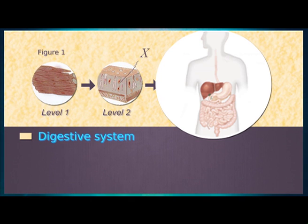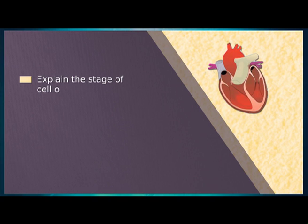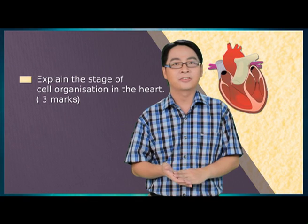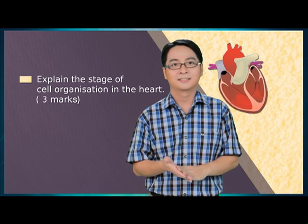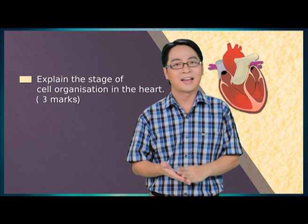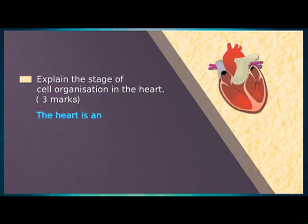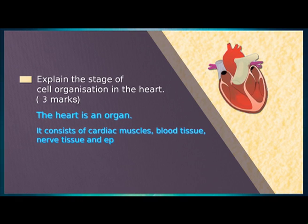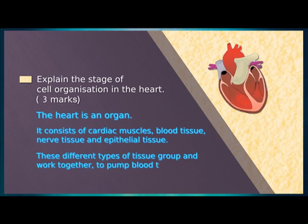Let's try another question. Explain the stage of cell organisation in the heart. Three marks. First, identify the stage of cell organisation of the heart. Then, the different types of tissue groups. And finally, the function. The heart is an organ. It consists of cardiac muscle, blood tissue, nerve tissue and epithelial tissue. These tissues work together to pump blood all over the body.